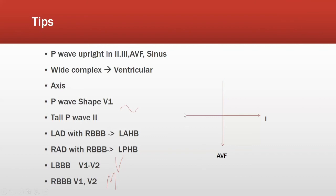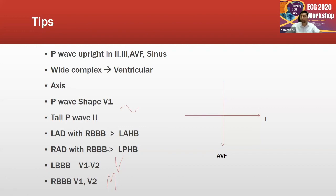The P wave is important: especially in left ventricular hypertrophy, you might see a biphasic P wave in lead V1 — what I call an 'Alif Madda' P wave. If you see tall P waves more than two small boxes in lead II, that indicates right atrial enlargement.